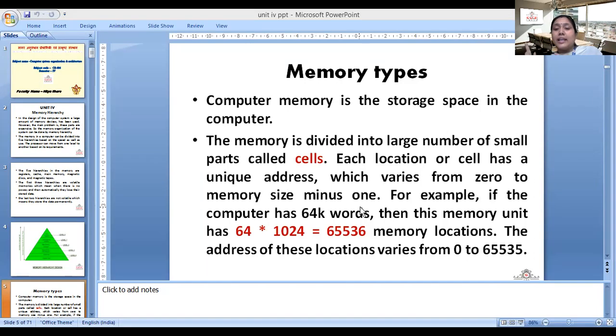0 to 63. For example, if the computer has 64k words. So what does this mean? 64k words means then this memory unit has 64 multiplied 1024. Last time I told you, remember that k represents 1024 locations. If we talk about total memory locations, how much will it be? If our memory size is 64k, then k means 1024. We will multiply 64 by 1024.